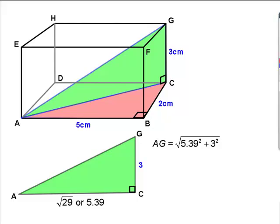So we've got two ways of calculating it. We can use either of those values, square root of 5.39 squared plus 3 squared, 6.17 to 3 significant figures.